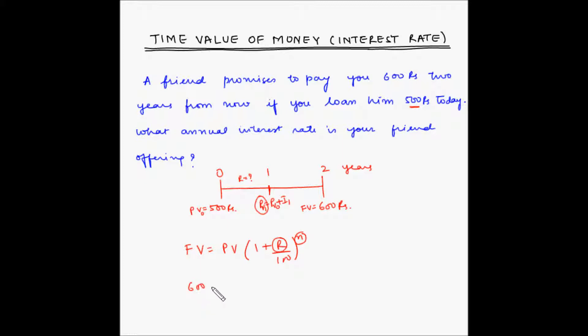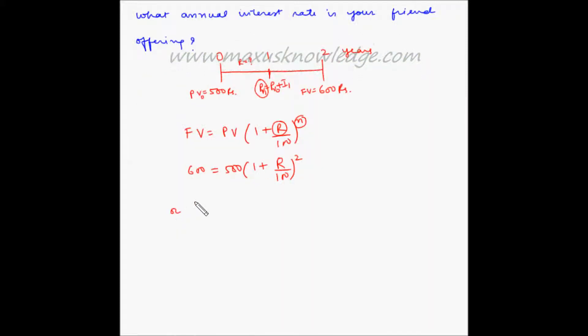So here future value is 600, present value is 500, 1 plus r - r is the unknown - 1 divided by 100 to the power n. n here is 2, we have two periods.